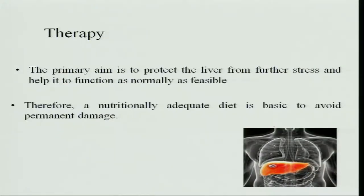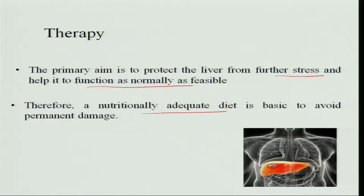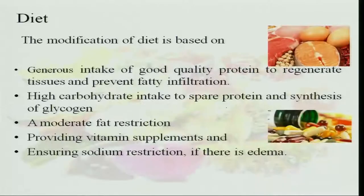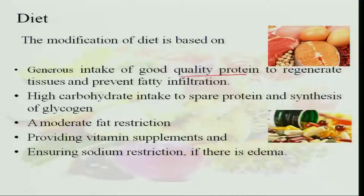The primary aim of therapy is protection of the liver from further stress and helping it function as normally as possible. Therefore, a nutritionally adequate diet is very important for preventing liver damage. Diet modification is based on generous intake of good quality protein so that we can regenerate the damaged liver tissues and also prevent fatty infiltration in the liver.